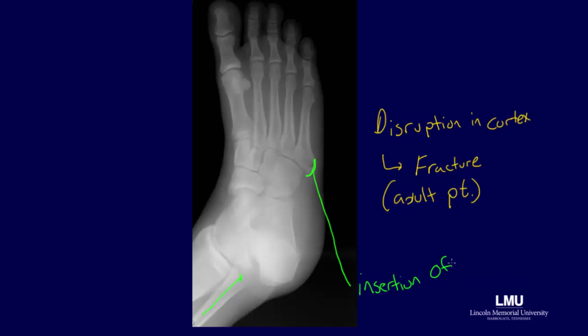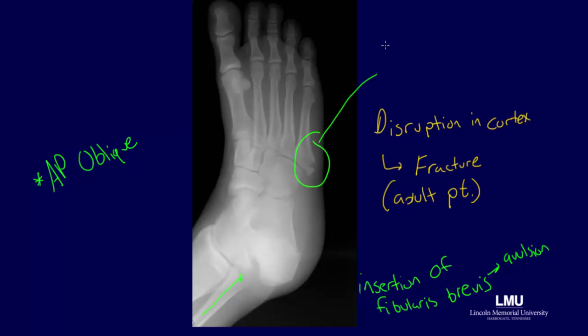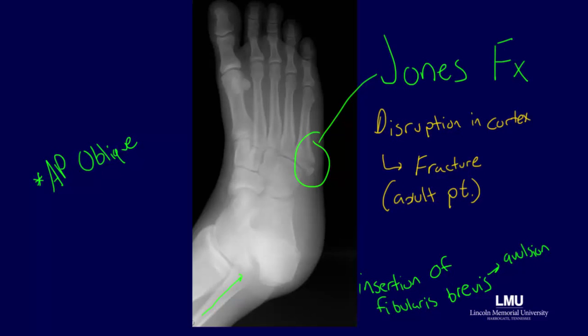Recall that the muscle insertion of fibularis brevis is at the tuberosity of the fifth metatarsal. For this reason, avulsion fractures are also a possibility at this location. While we have discussed a number of different pathologies using this image, remember that this is a Jones fracture.